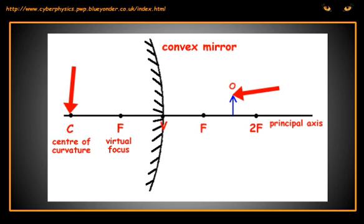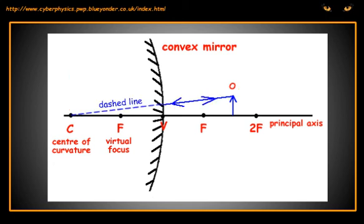Put your ruler on the object point, and at C, or 2F, on the far side of the mirror. Draw a dashed line from C to the mirror, and then a solid line to represent the ray that gets reflected back along its own path.